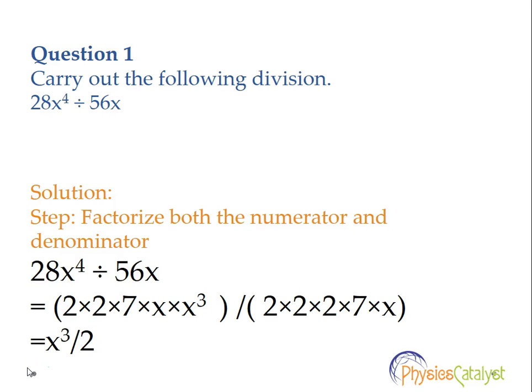Now canceling the common factors, we get x cube divided by 2. That is the answer. In these types of questions we need to factorize both the numerator and denominator, cancel out the common terms, and then find the answer.